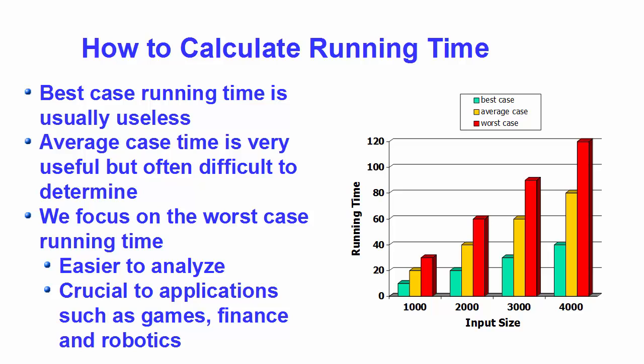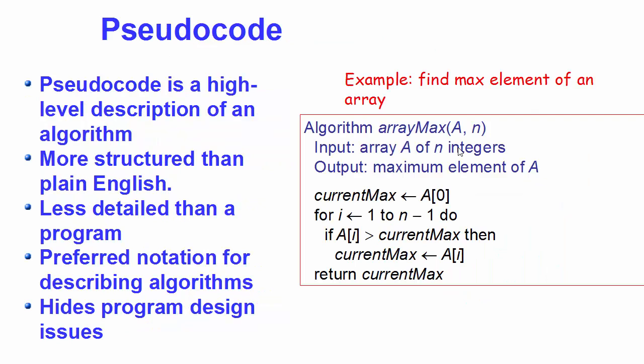In the last slide I showed you a pseudo code to explain how the best case, worst case, and average case running time scenarios work. Pseudo code is a high-level description of an algorithm. We use pseudo code because it's more structured than plain English, less detailed than a program, and it's the preferred notation for describing algorithms because it concentrates only on the algorithm and not the design issues of the program.